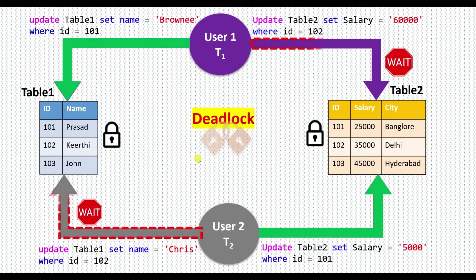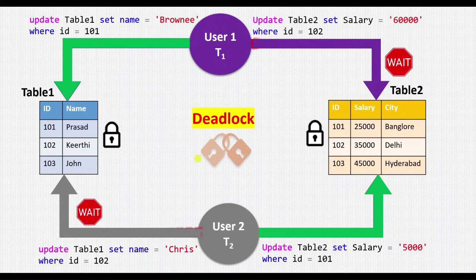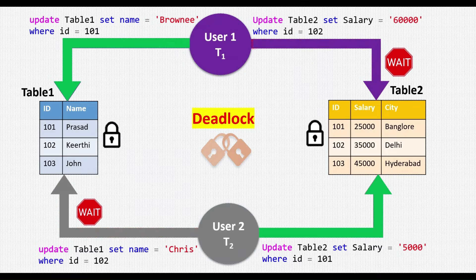This situation we can call a deadlock. When SQL Server finds a deadlock, it will choose one of the processes as the deadlock victim and roll back all modifications that had been performed, allowing the other process to continue. The user then has to rerun the deadlocked victim's transaction.